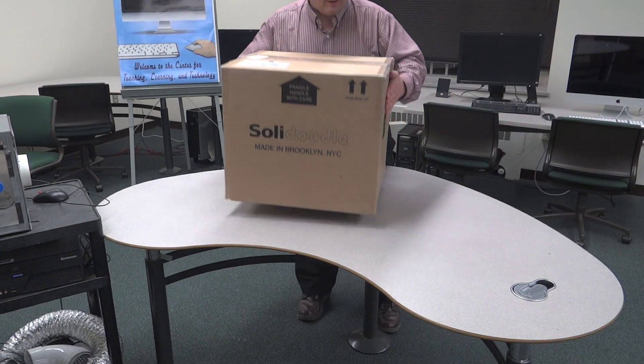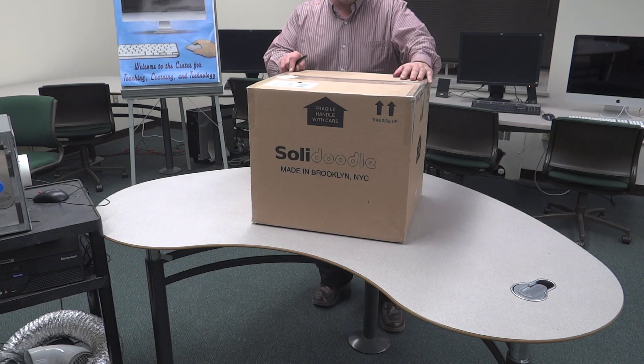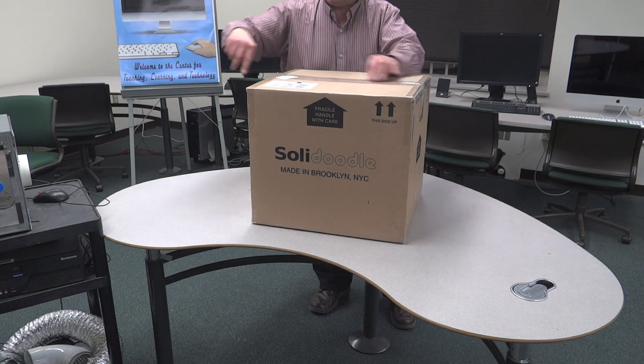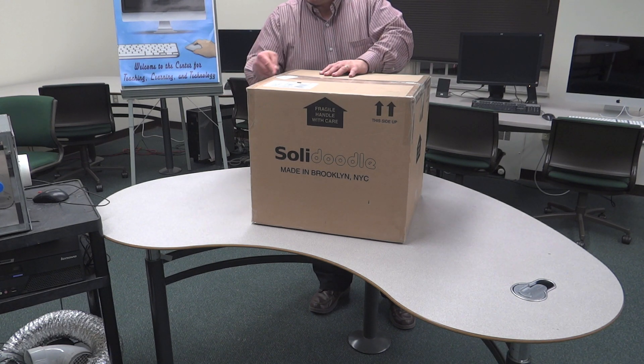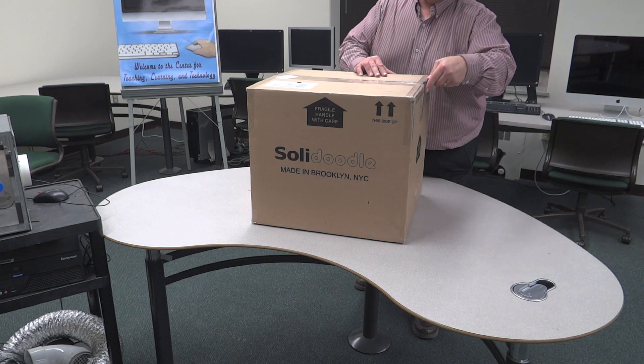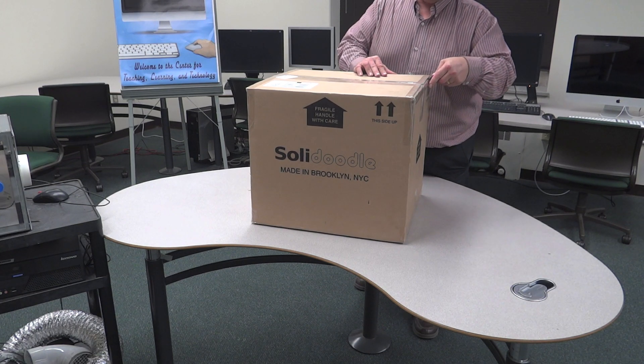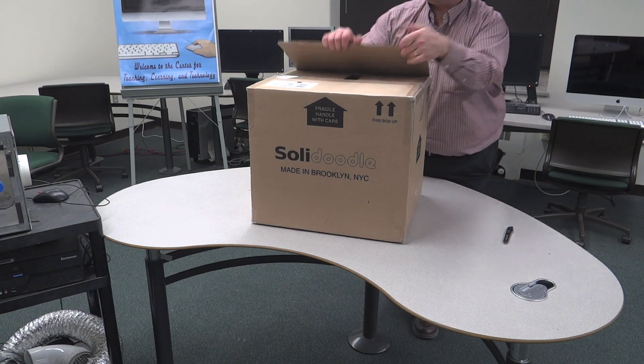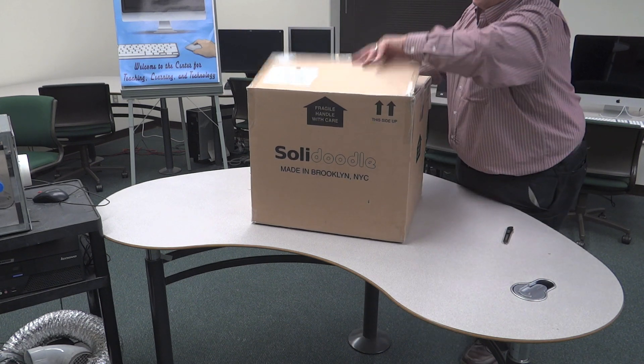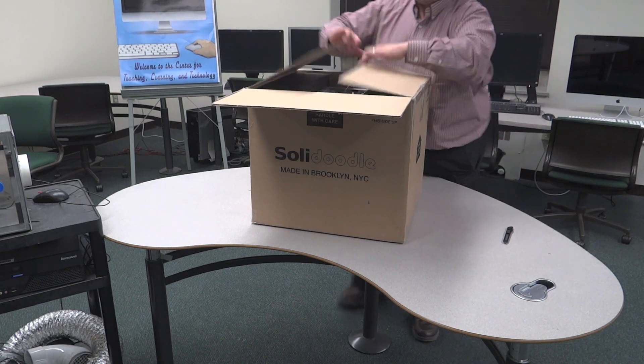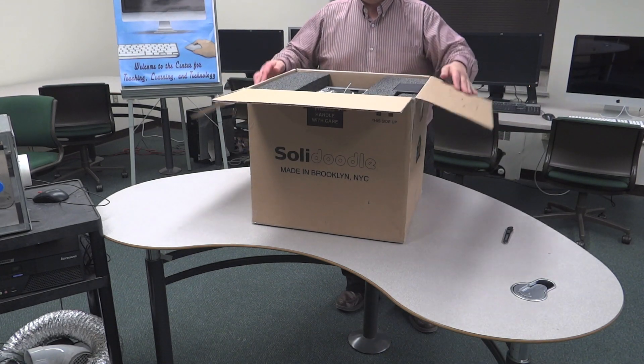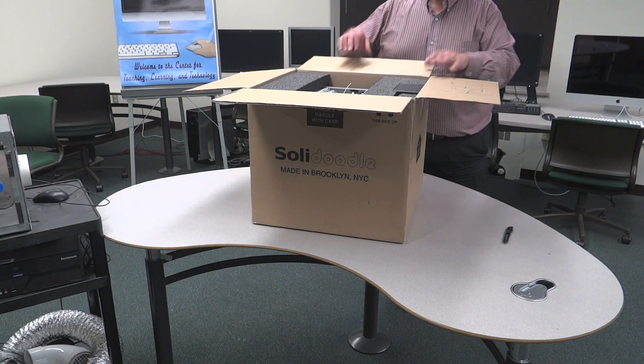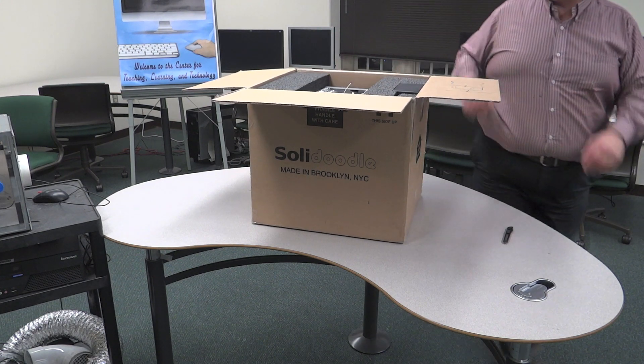So, first of all, this box is pretty light. Let's go ahead and open it. Now, for the SolidDoodle 2, we had purchased the deluxe option, which came with a case and a plexiglass front cover. And for the SolidDoodle 3, that's not an option. So, opening it up, I'll need to adjust the camera so it's more easily visible.